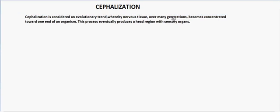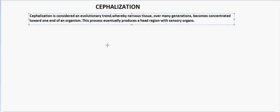Another question many people ask is: why is cephalization connected with bilateral symmetry? Most cephalized organisms have bilateral symmetry, while those with radial symmetry do not have cephalization. Let us look at the connection between the two.